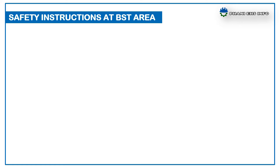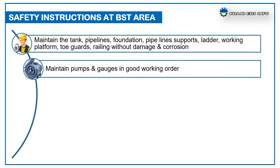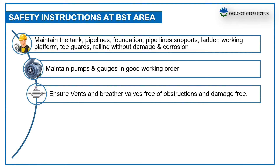To avoid the above mentioned hazards, we have to follow some safety precautions at bulk storage tank areas. Maintain the tank, pipelines, foundation, pipeline supports, ladders, working platform, dog guards, and railing without damage and corrosion. Maintain pumps and gauges in good working order. Ensure vents and breather valves are free of obstructions and damage free.